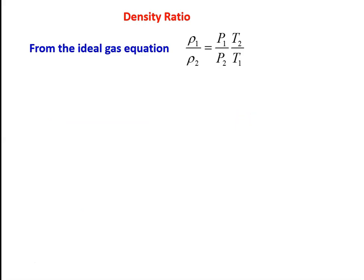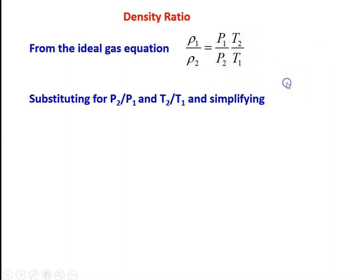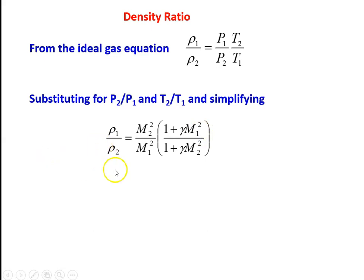The next property is density. Earlier we discussed the pressure variation and temperature variation, and now the property variation is the density ratio. From the ideal gas equation, we may write ρ₁/ρ₂ = (P₁/P₂) × (T₂/T₁). Substituting for P₂/P₁ and T₂/T₁ from the earlier lectures and simplifying, we get ρ₁/ρ₂ = (M₂²/M₁²) × (1 + γM₁²) / (1 + γM₂²).